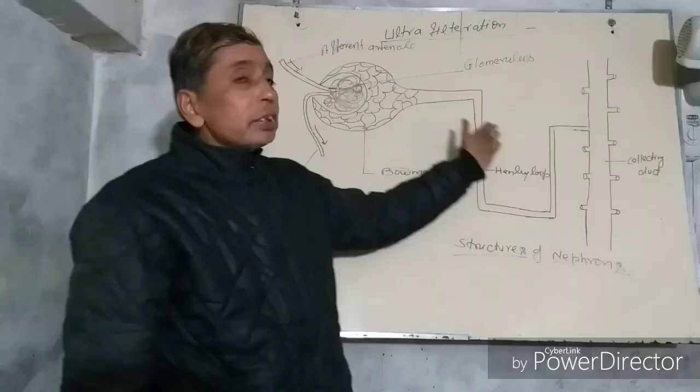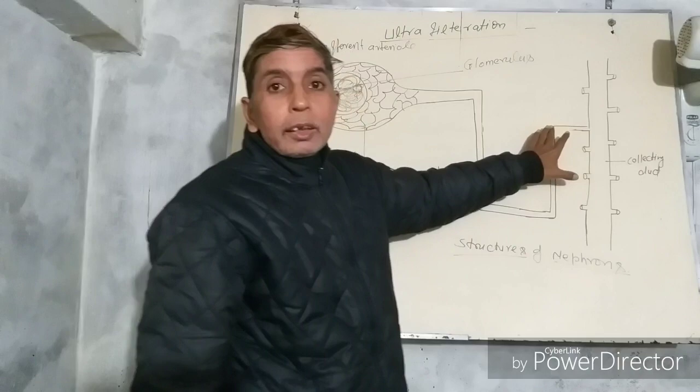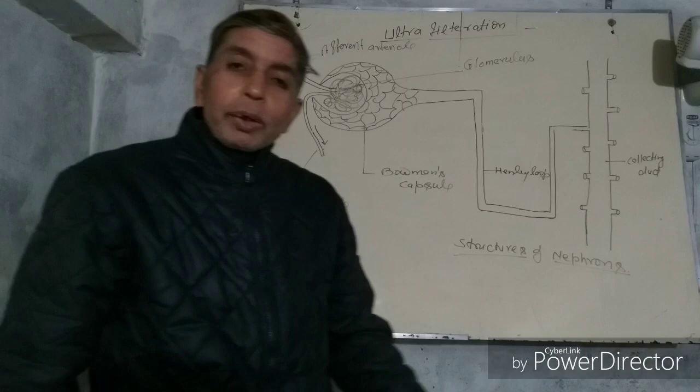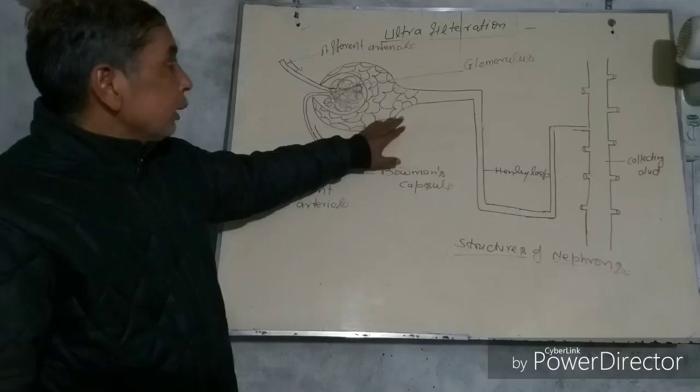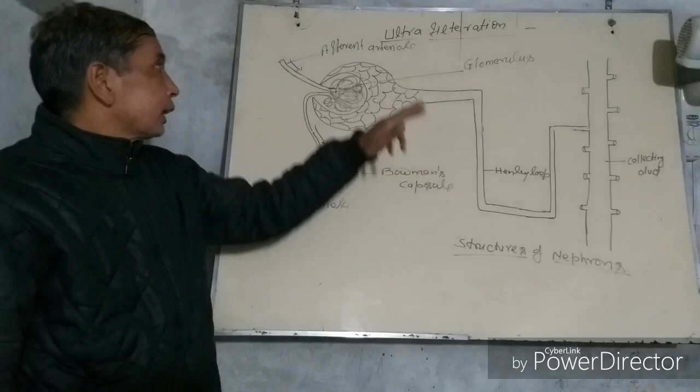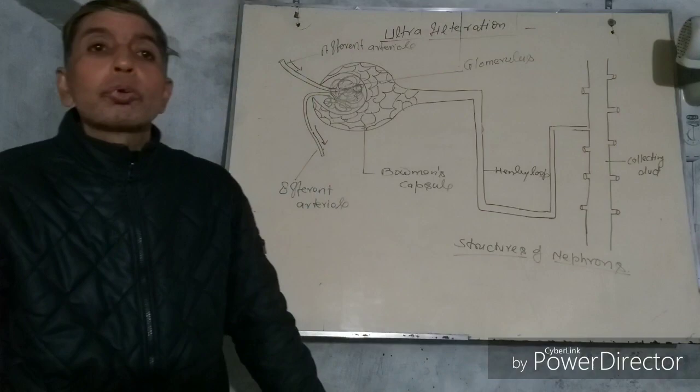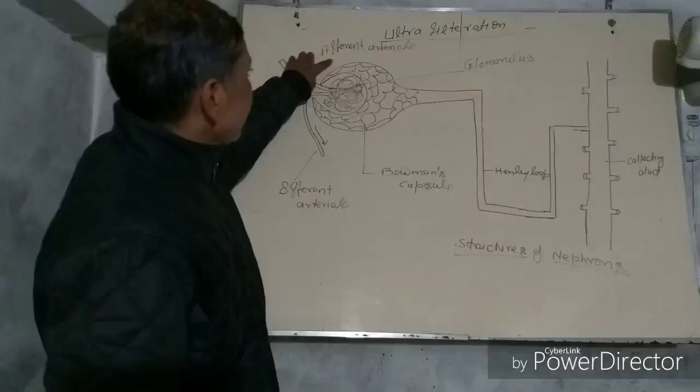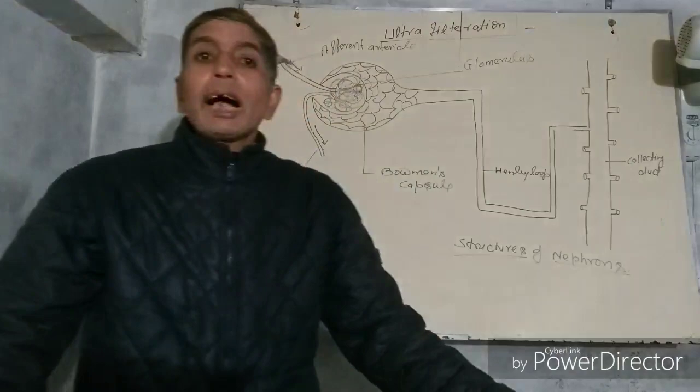These are the structures of the nephrons. The nephrons are filled within the kidney. The kidney has two parts: one part is called the cortex and another part is the medulla. The artery which transfers blood from the heart to the kidney is called the renal artery. The renal artery is divided into many arterioles, and these arterioles enter the nephrons. They are called afferent arterioles. Such tube-like structures are called tubules.